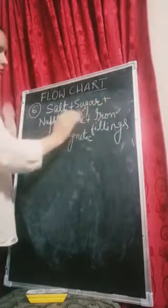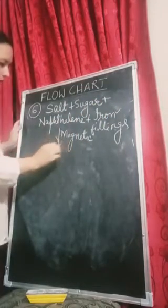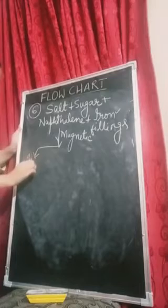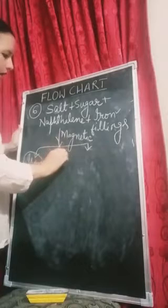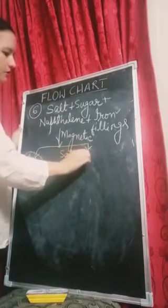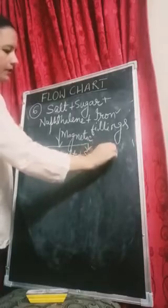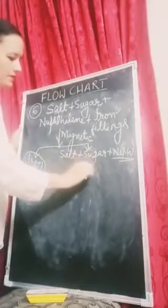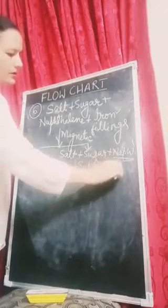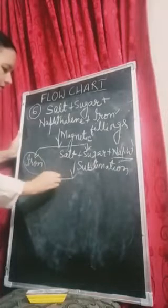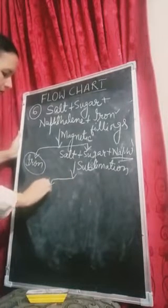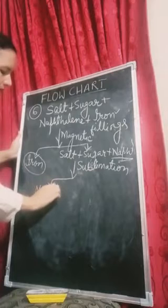Use a magnet because you see iron — use the magnet in the beginning. So iron is separated, and I am left with three things: salt, that is common salt, plus sugar and naphthalene. Out of them, naphthalene is a sublimate, so use the method of sublimation. After sublimation, naphthalene will get separated because it is a sublimate and it will go into the funnel.